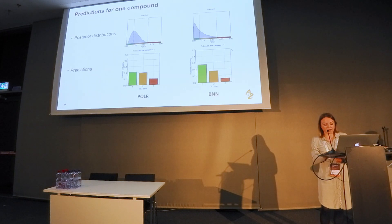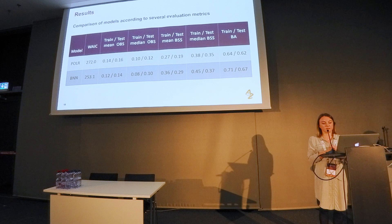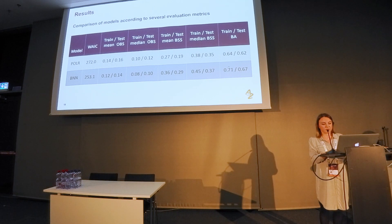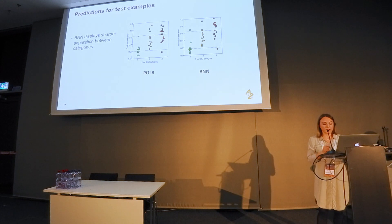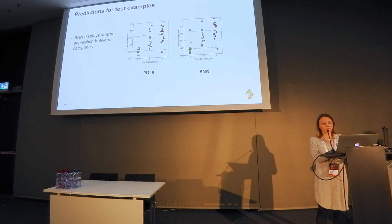In the literature on prediction of toxicity and liver injury, the standard benchmark is 70% accuracy. The proportional odds logistic regression is not too close to this number, while the BNN makes us quite satisfied with the results. Looking at all predictions, where the x-axis is the true label and the y-axis is the latent variable, the BNN model distinguishes classes much more sharply — categories two and three overlap much less than with ordered logistic regression.